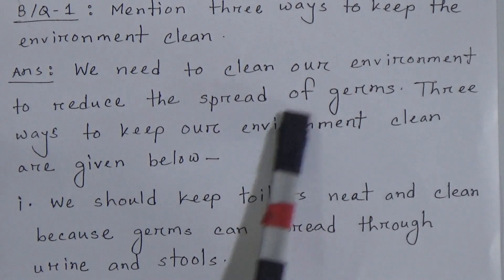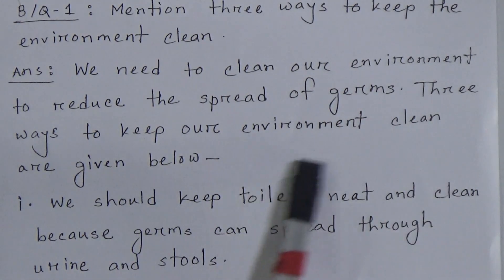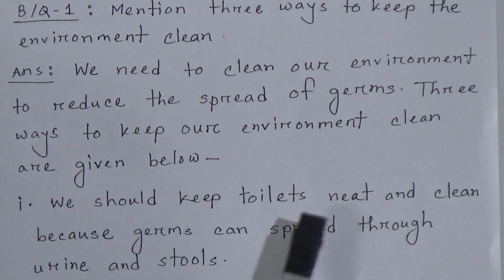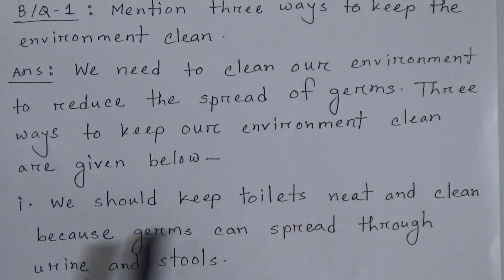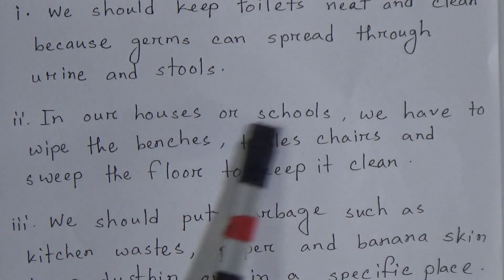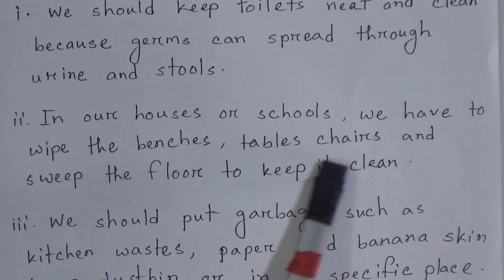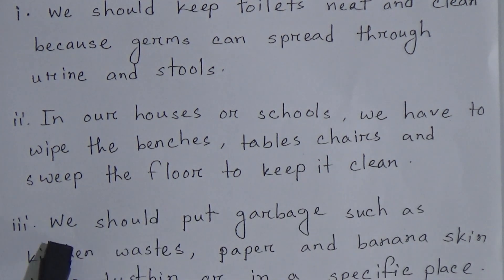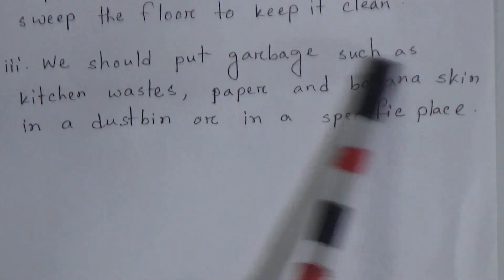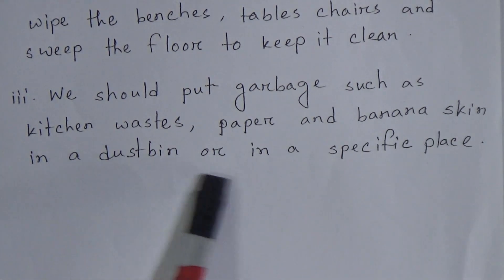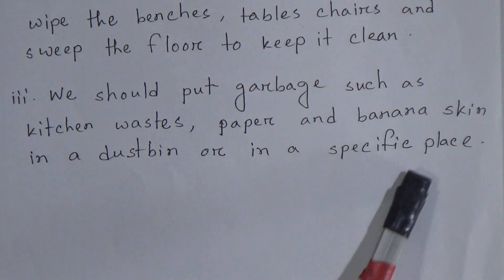Repeating broad question one. Three ways to keep our environment clean: Number one — we should keep toilets neat and clean because germs can spread through urine and stools. Number two — in our houses or schools we have to wipe the benches, tables, and chairs and sweep the floor. Number three — we should put garbage such as kitchen wastes, paper, and banana skin in a dustbin or in a specific place.